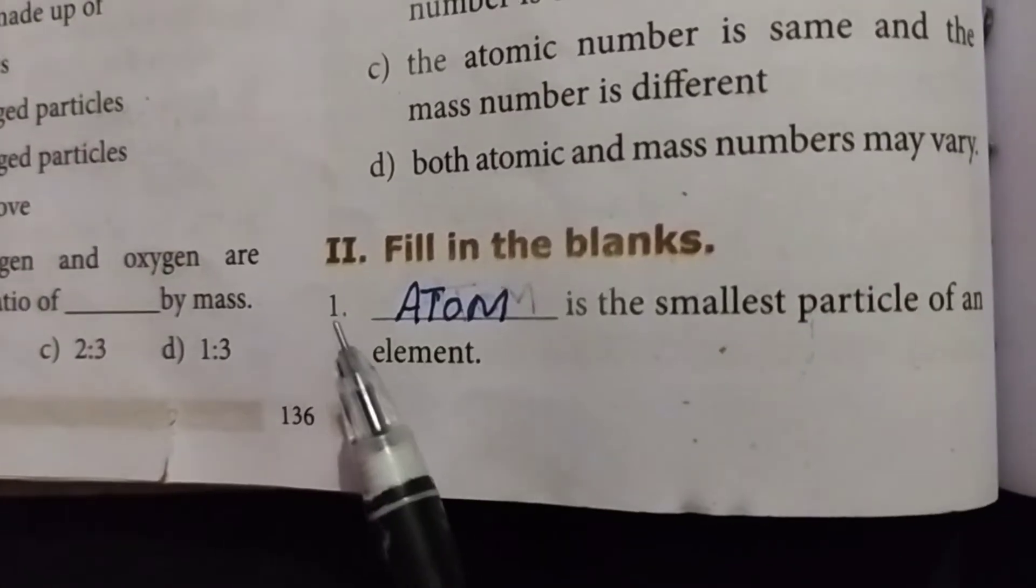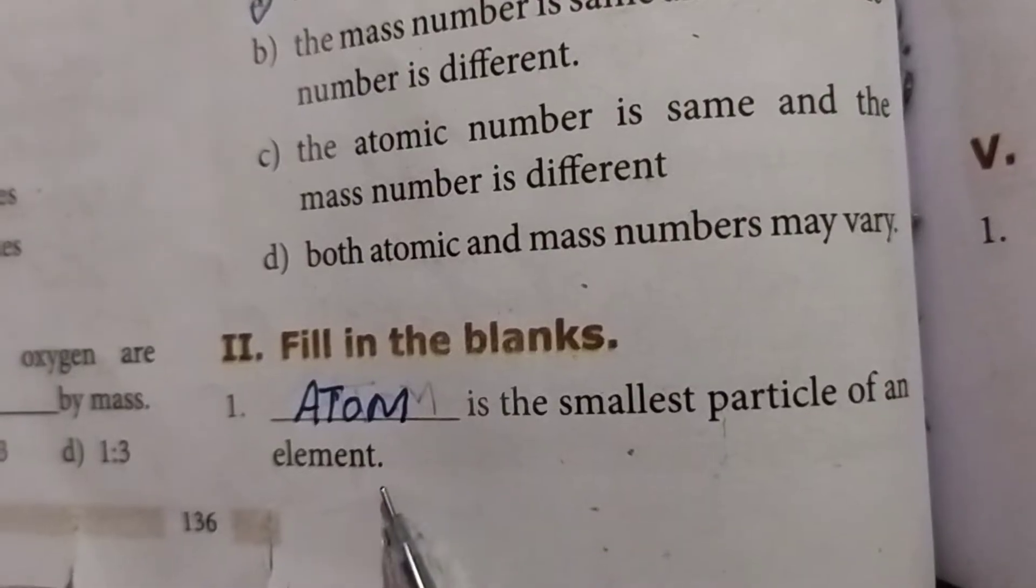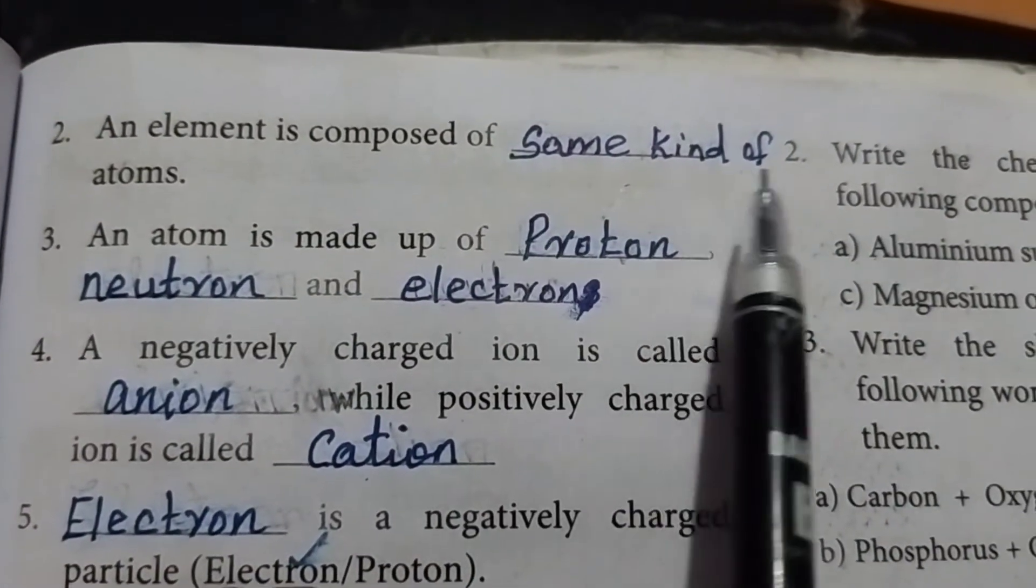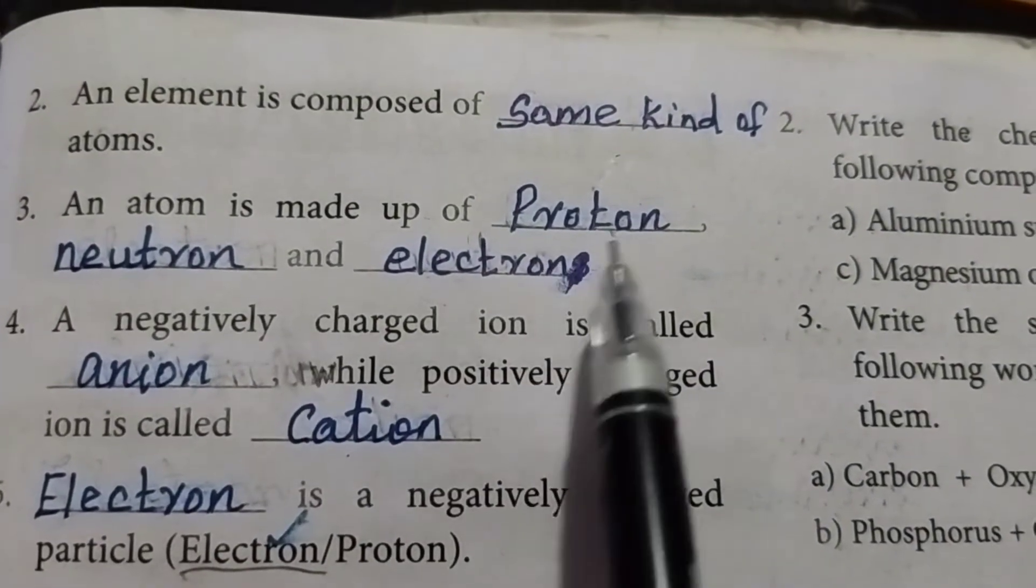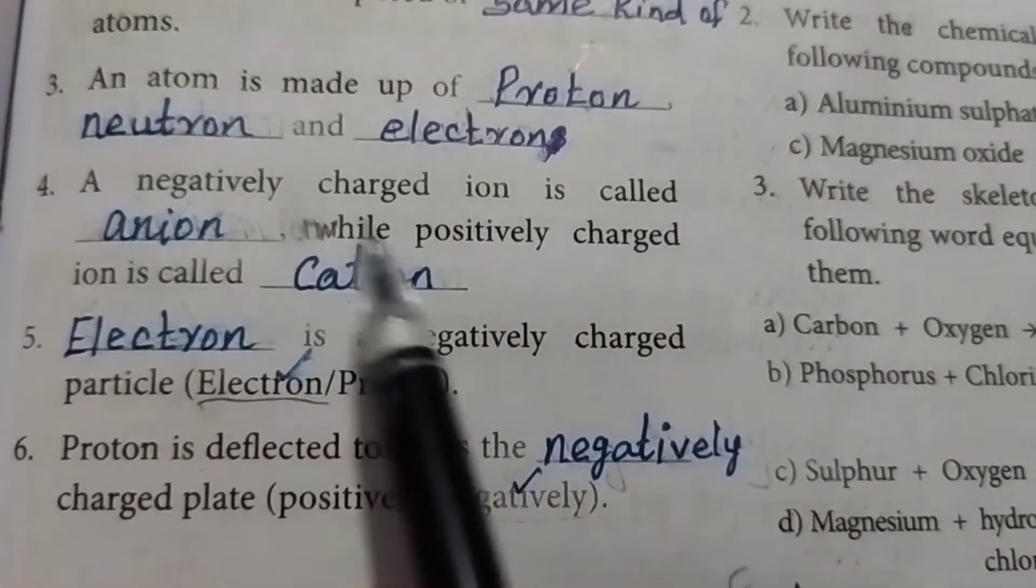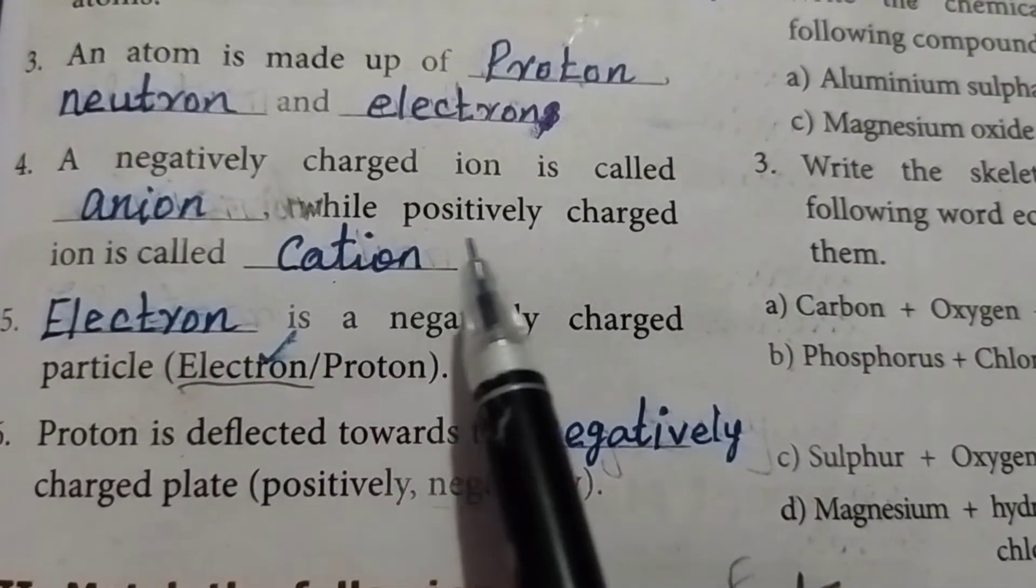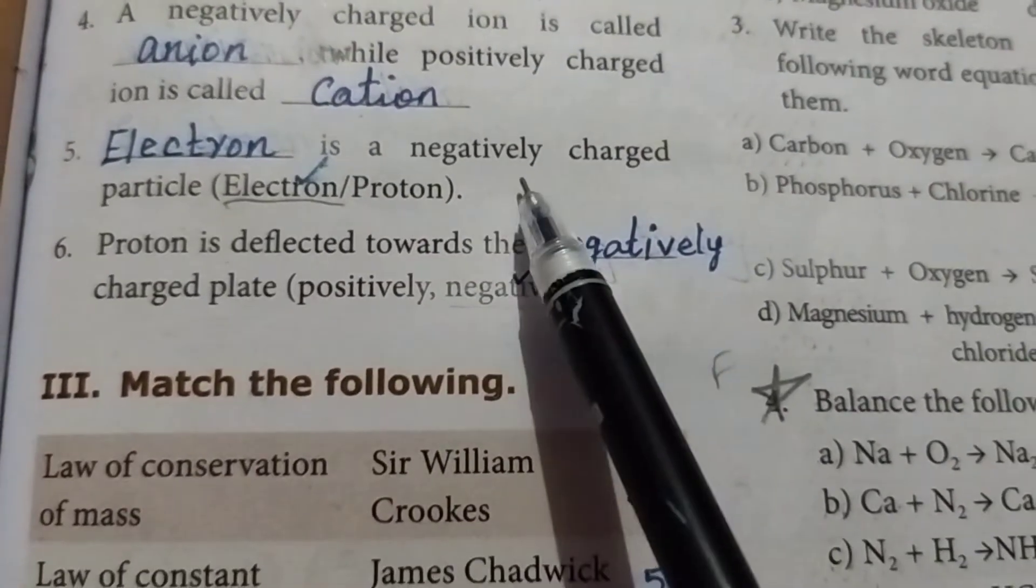Roman letter 2, fill in the blanks. First one: atom is the smallest particle of an element. Second one: an element is composed of same kind of atoms. Third one: an atom is made up of proton, electron, and neutron. Fourth one: a negatively charged ion is called anion while positively charged ion is called cation.